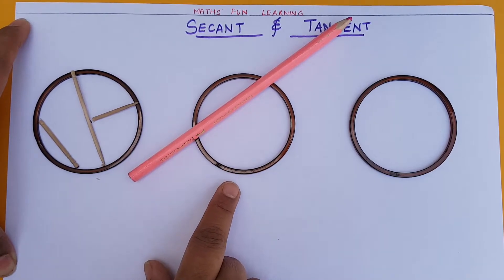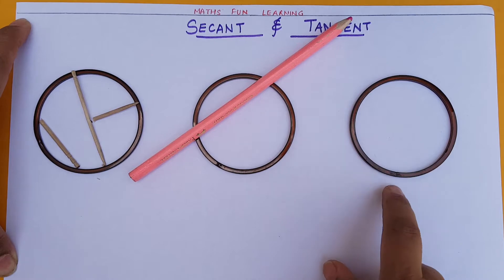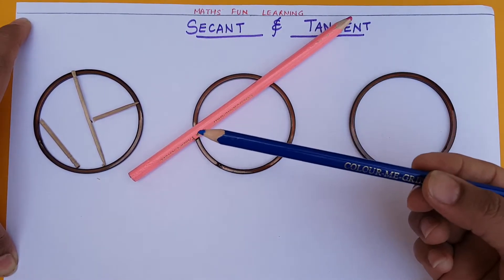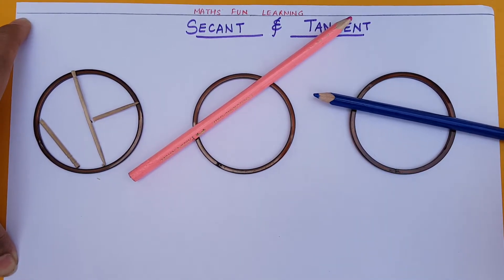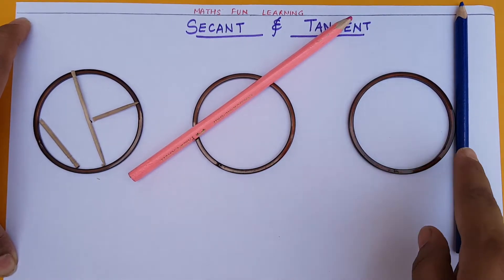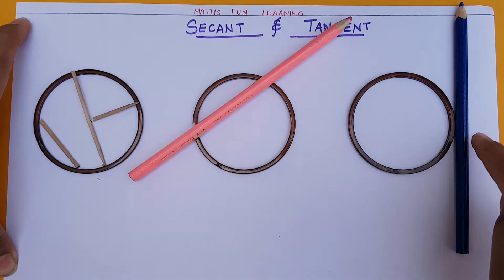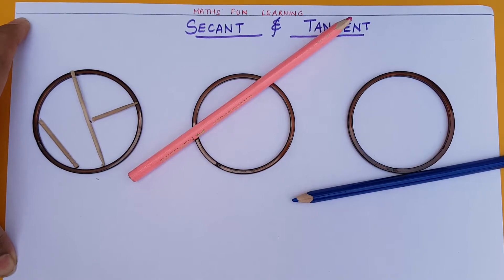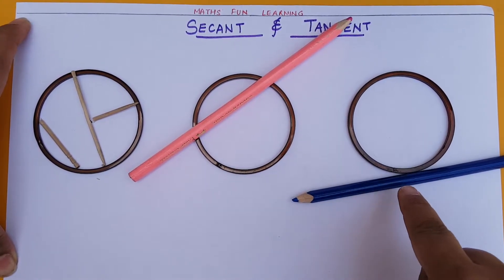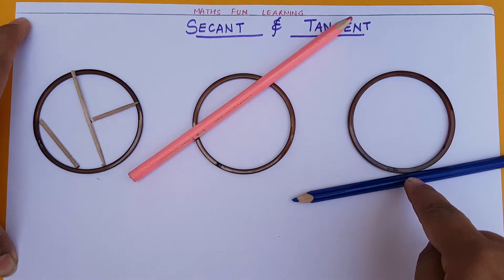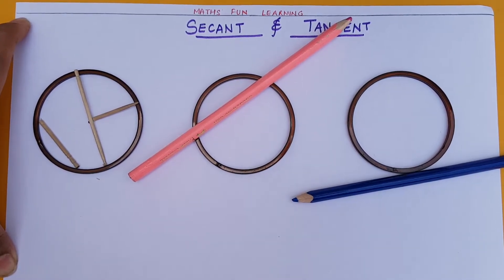Now what is tangent? Let's do an activity to understand the difference between secant and tangent. I'll take another pencil. This tangent line is also a straight line but it moves near the circle like this. If you observe, the tangent line does not cross the circle — it only touches the circle. You can see the line and circle join at just one point, and that point is called the point of contact.